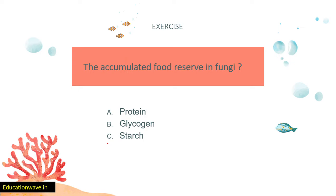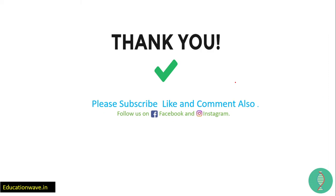The most important question from this chapter: what is the accumulated food reserve in fungi, and in what form is it stored? We know plants store food as starch. Protists store as protein. So what form do fungi store their food reserve in - protein, glycogen, or starch? Please write your answer in the comments. For the full chapter playlist go to our description box. Follow us on Instagram for doubts. Please subscribe, like, and comment. Thank you so much!